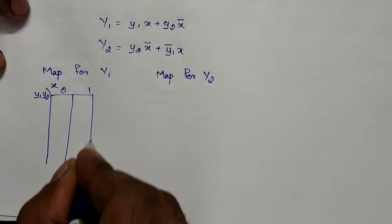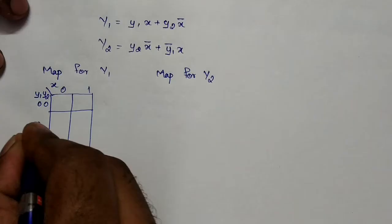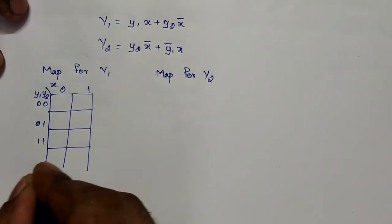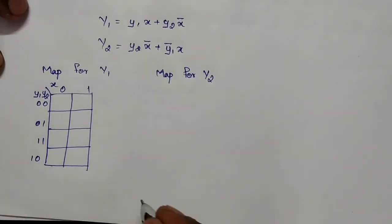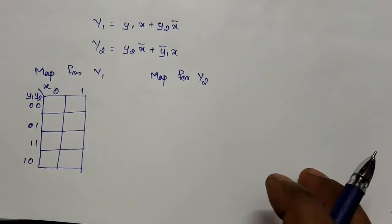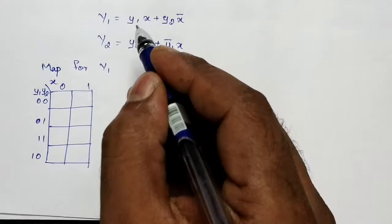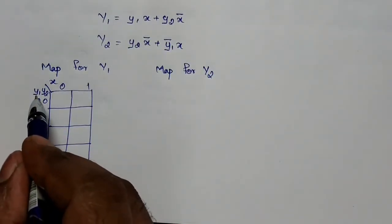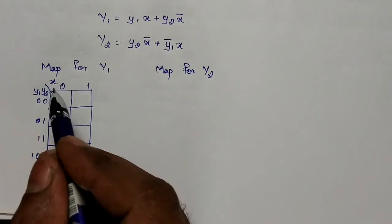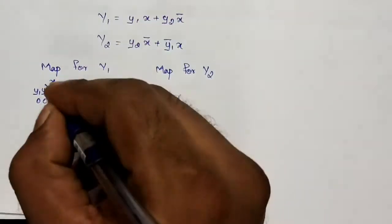The states on the vertical axis are: 00, 01, 11, 10. We are having the expression for Y1 as y1·x plus y2·x-bar. We have two variables y1, y2 on the vertical axis and x on the horizontal axis. It is better to use the inverse K-map method — just split each term.